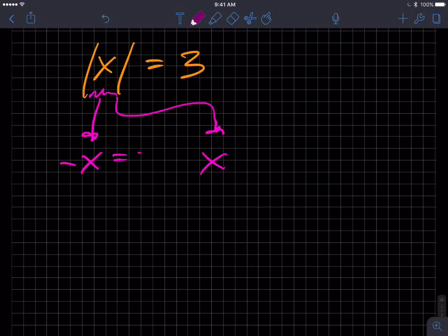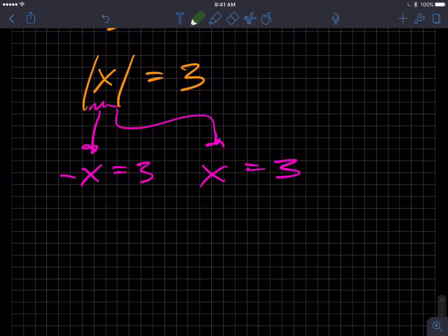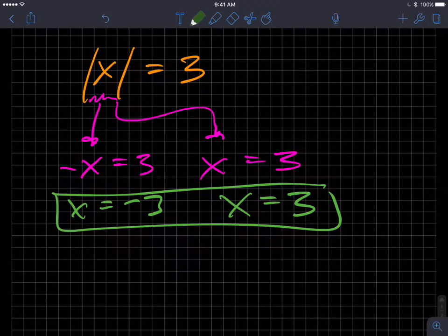So we're going to set this equal to the right-hand side. And so this one becomes x is equal to negative 3, and this is x equals 3, and so that also provides us with two solutions.